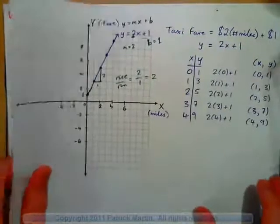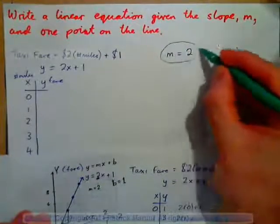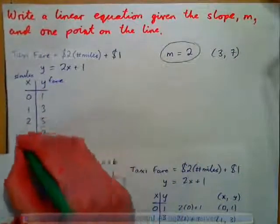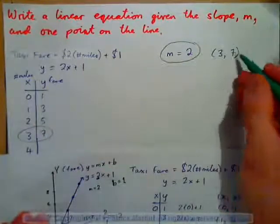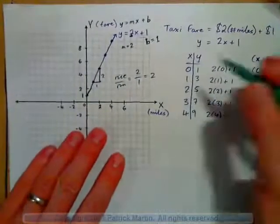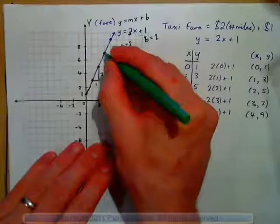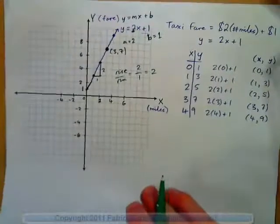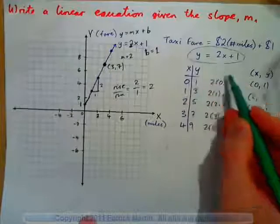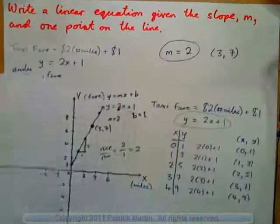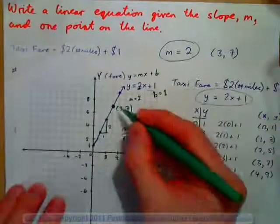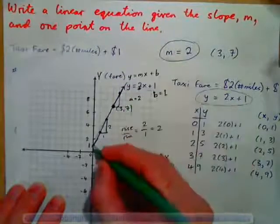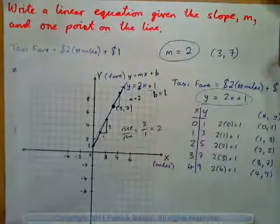Now imagine they told you the slope of a linear equation is 2, and the point (3, 7) is on the line. Because when you do your fare, 3 miles cost $7. So the point (3, 7) is on the line and the slope is 2. This is the linear equation y equals 2x plus 1. How do we find that equation algebraically? We could plot the point (3, 7), draw a line with a slope of 2, and find the equation — slope 2, intercept 1.